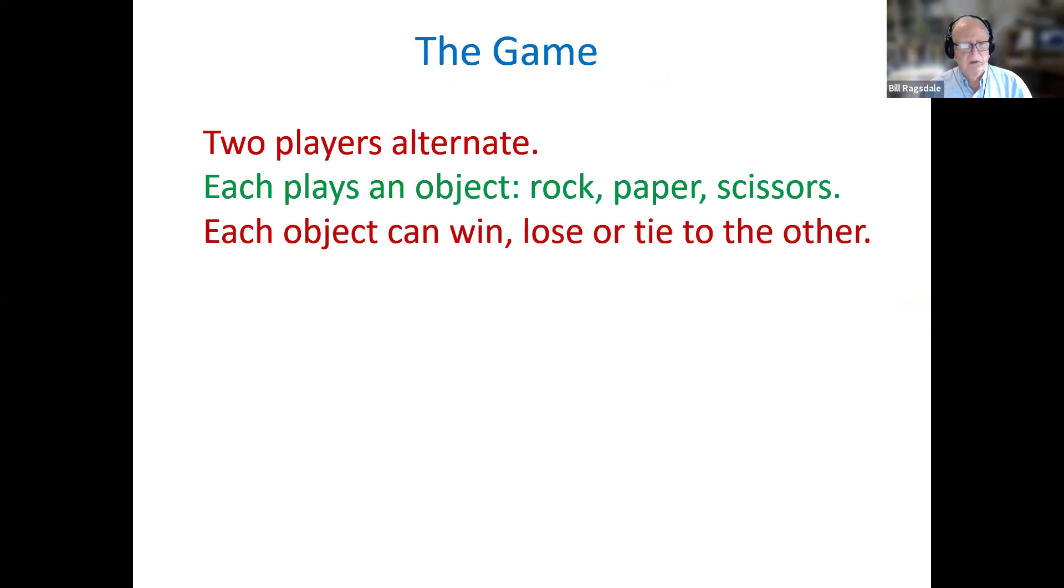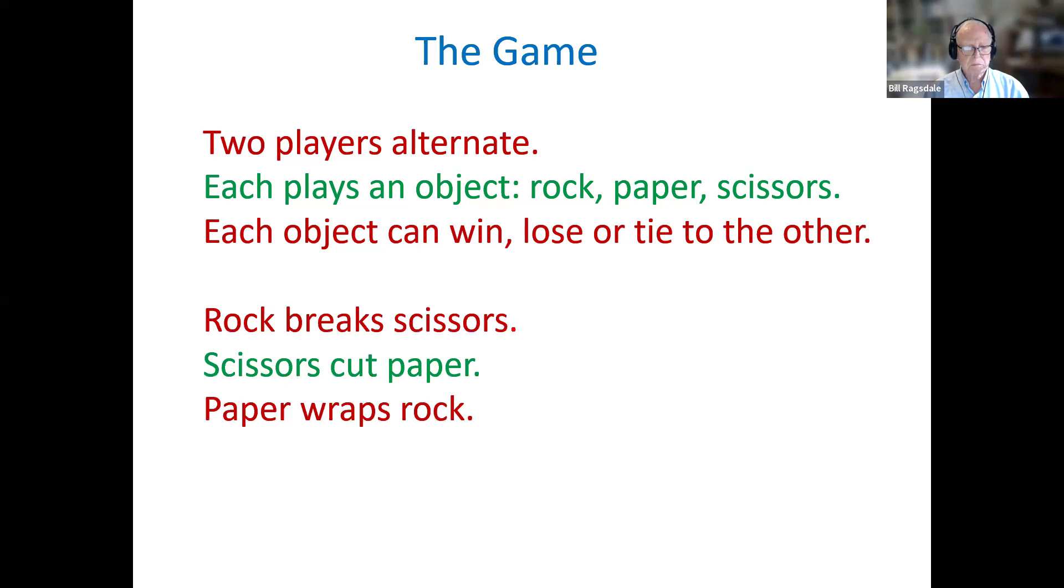So to summarize, there are two players who alternate taking turns. The first player picks either a rock, paper, or scissors, and the other player then matches with their guess. Each object can either win, lose, or tie, so there are a total of seven possible outcomes. The rules are that rock breaks scissors for a win, scissors cut paper for a win, and paper wraps rock for a win.